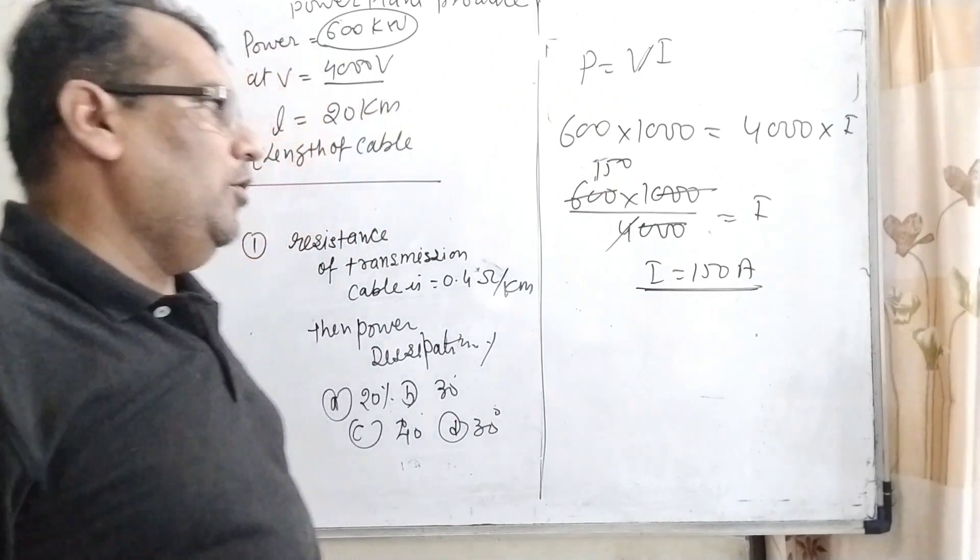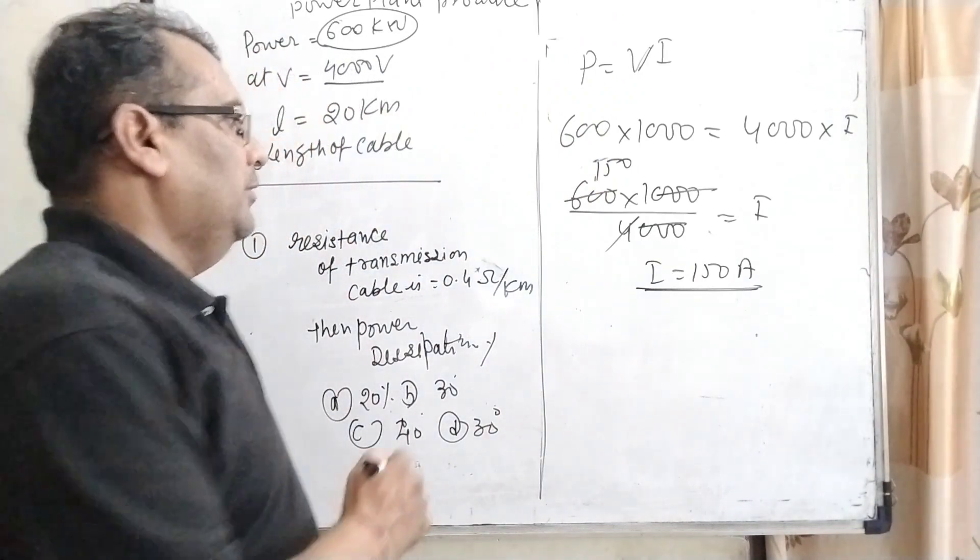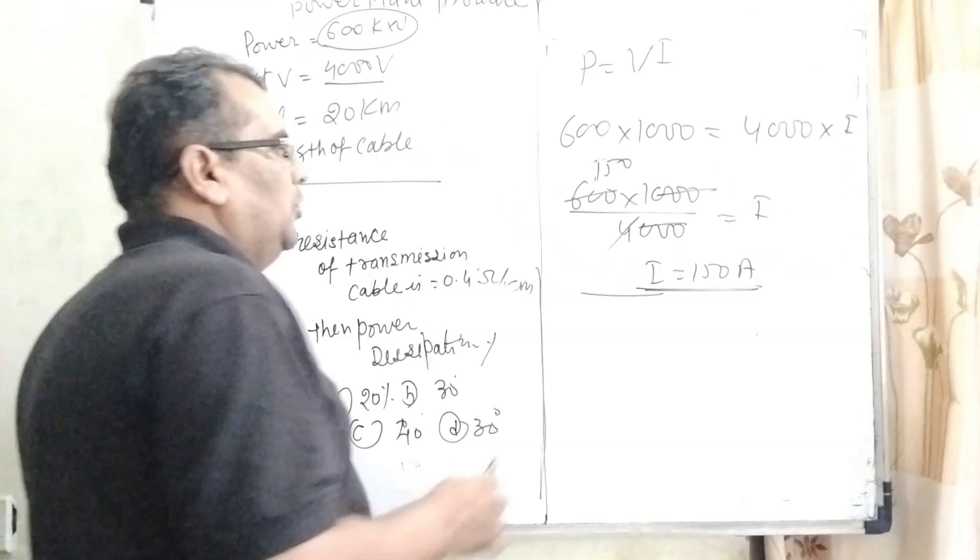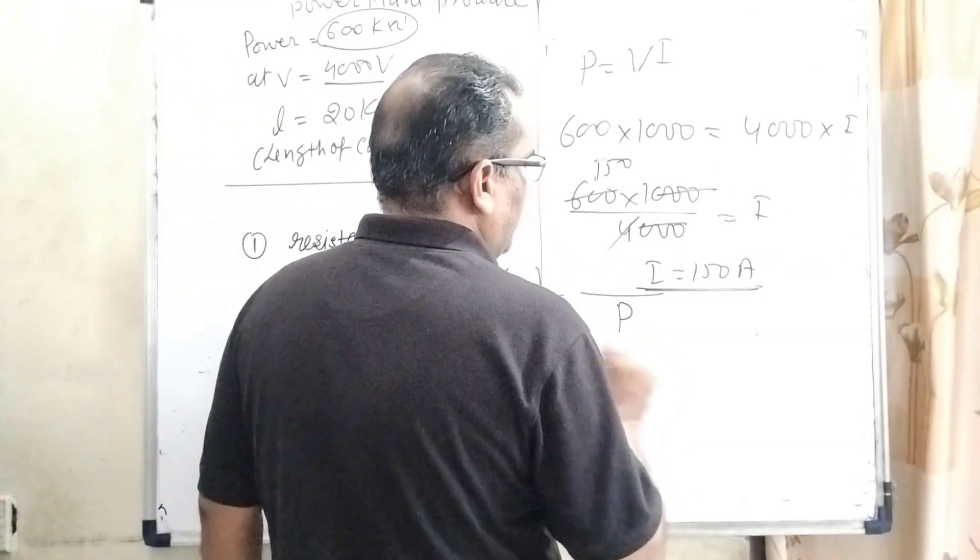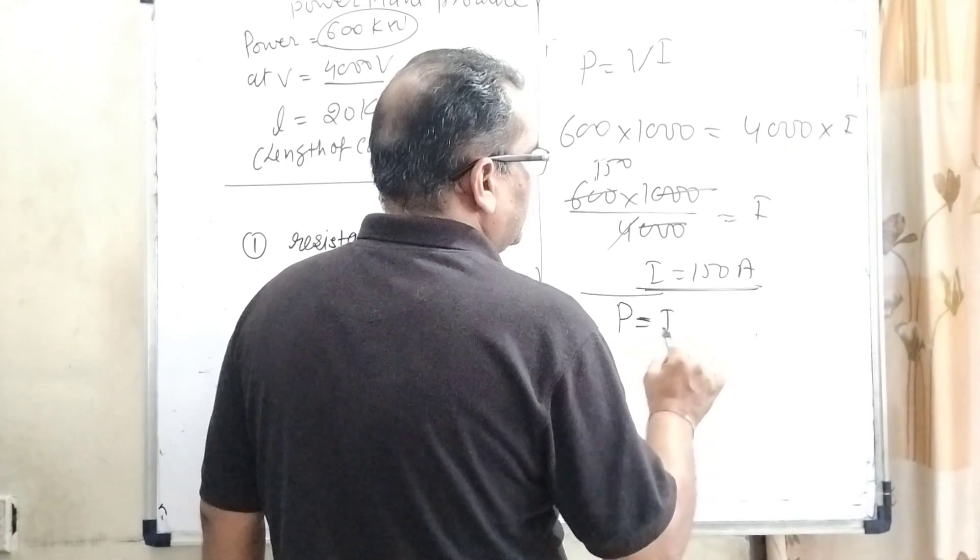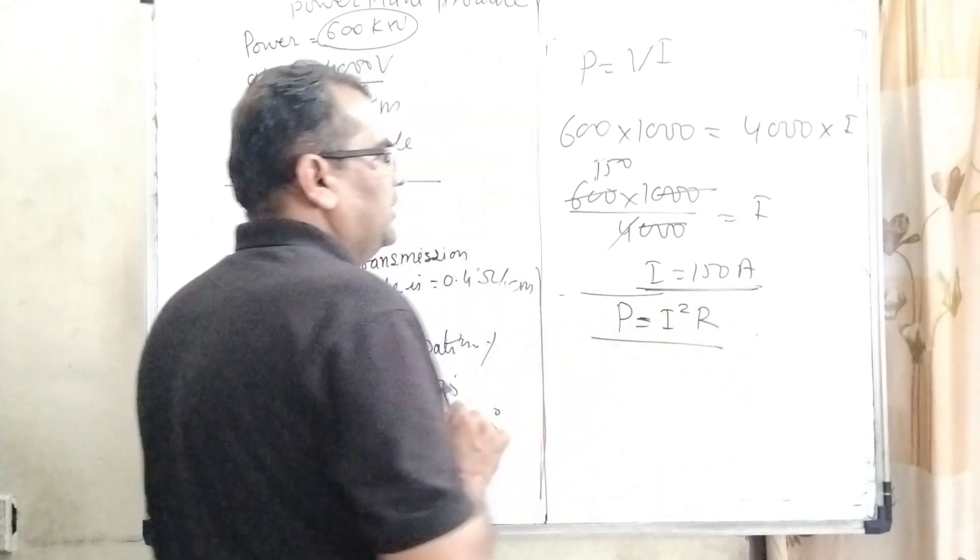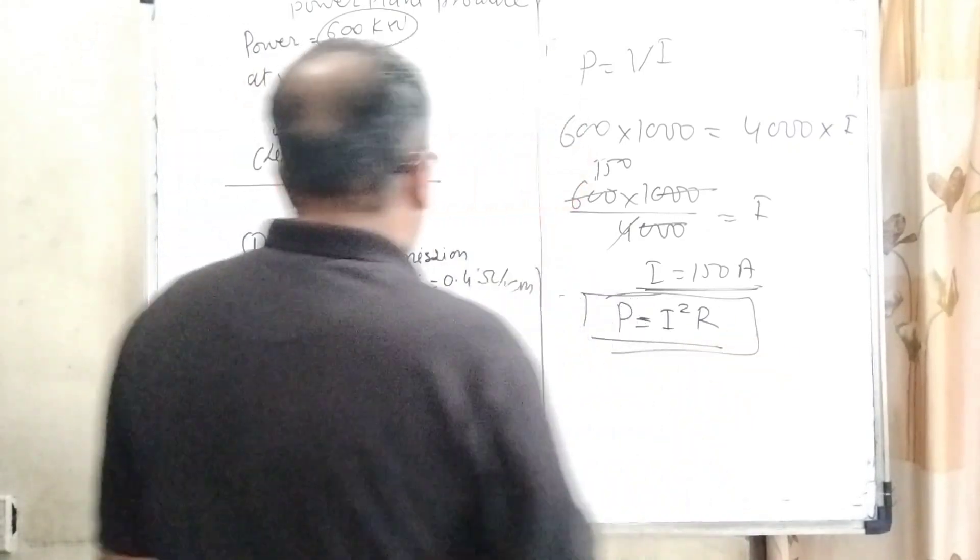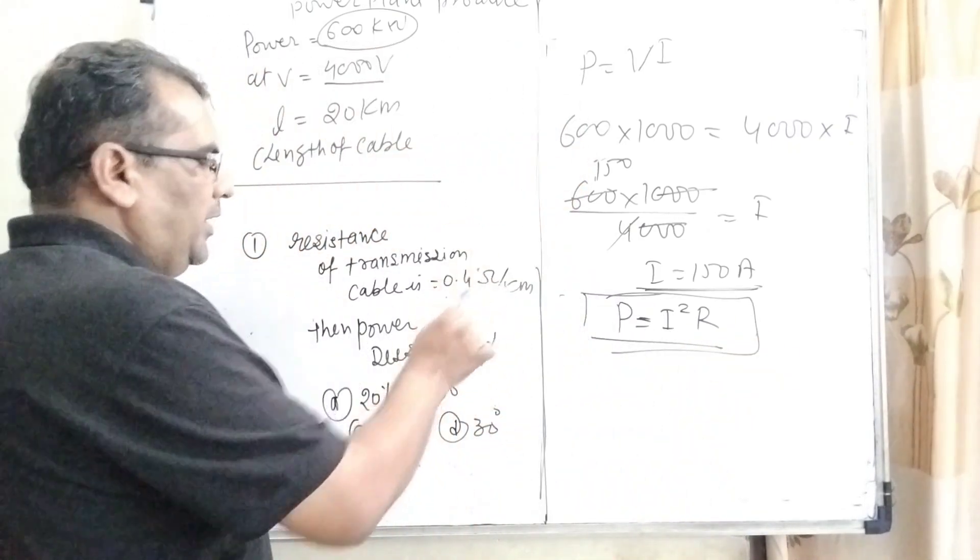And now we have to find out when consumer uses this power. So here we are using this formula P equal to I square R. So here we have the current 150. But the resistance, for the resistance we have given that 0.4 ohm per kilometer.